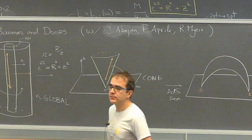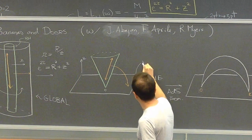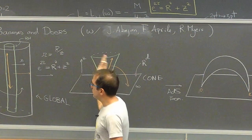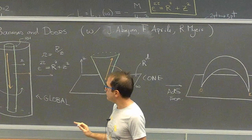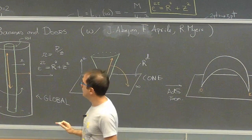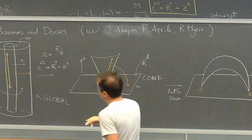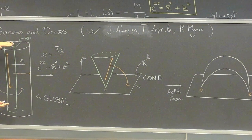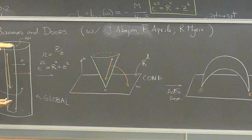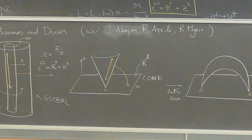By doing this change of variables we go from the global frame to the banana frame where the boundary is R^d. Normally when we consider the Euclidean black hole we make the Euclidean time circle periodic, imposing finite temperature dictated by the absence of a singularity at the horizon. But here I am not making this identification — I am not identifying the circle.